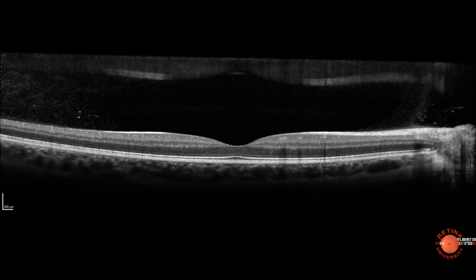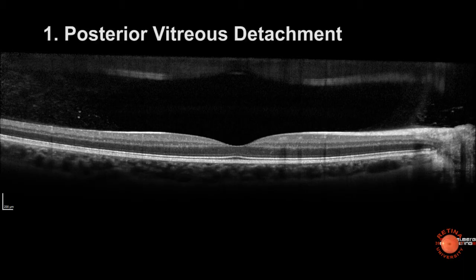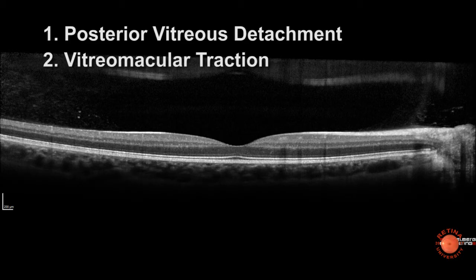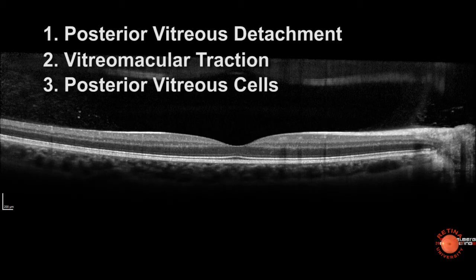The three things where I find the OCT scan useful in assessing the vitreous are: first, looking for the presence or absence of a posterior vitreous separation — this can be especially helpful in someone with acute symptoms; secondly, it shows vitreomacular traction beautifully; and finally, I'd like to use the OCT scanner to look for vitreous cells.